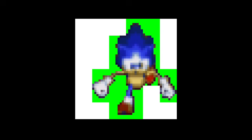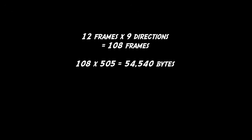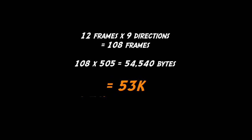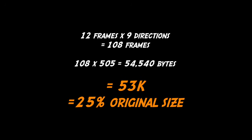Using this method reduced the overall size of each frame of the run animation from 608 bytes to 505 bytes. Factoring that in means that the final run animation ended up taking just 53k of cartridge space, which is less than a quarter of the original size.